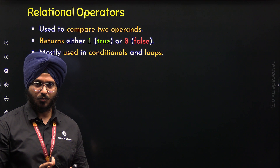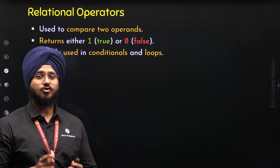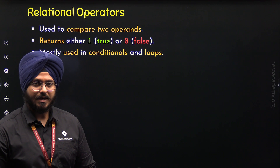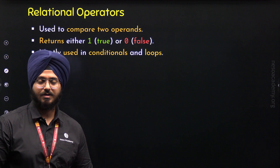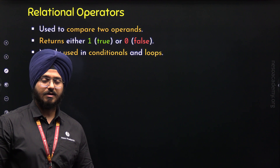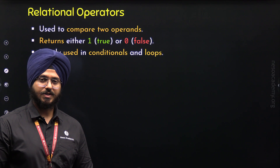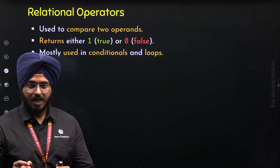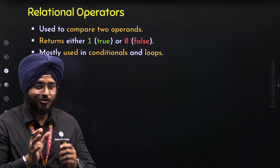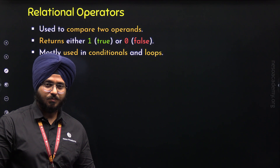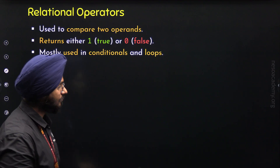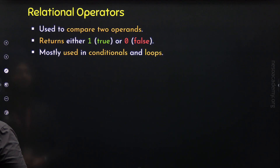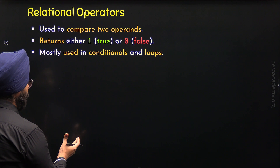With the help of a relational operator, we can check a specific condition — that is, we can compare two operands. Based on the comparison, we will either get true or false as the result. If we get true, then a specific task will get executed. We will understand conditionals and loops later in this course. For now, we just need to remember that with a relational operator, we can compare two operands and perform tasks based on that condition.